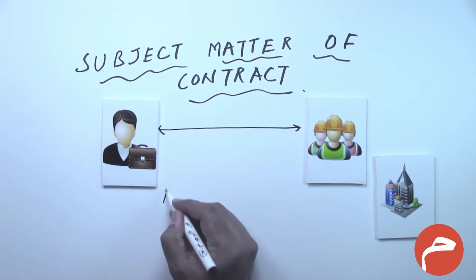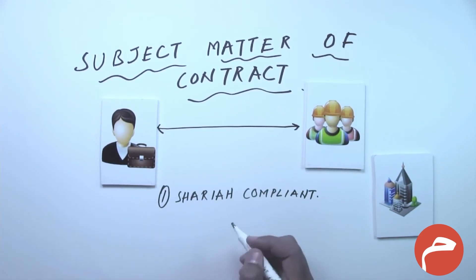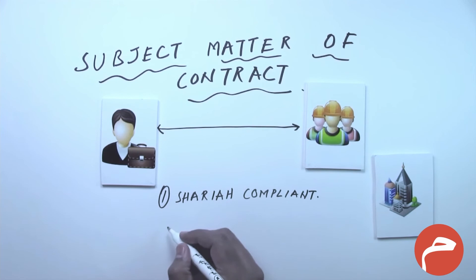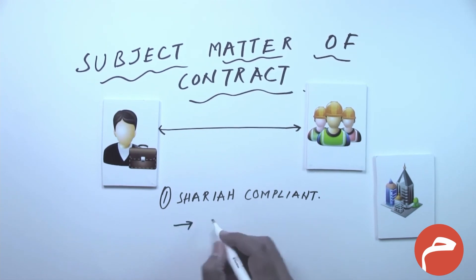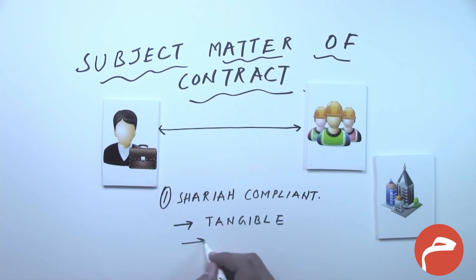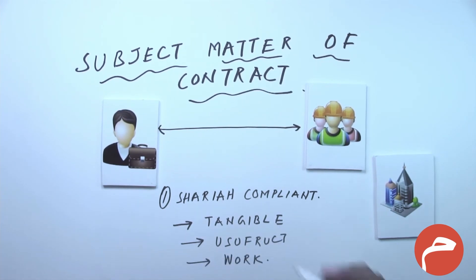As we have discussed, the subject matter of the contract has two important points: first, the subject matter must be sharia compliant; and second, in terms of the nature of the subject matter, it could be tangible, it could be usufruct, or it could be work. We have seen examples for each one of them.